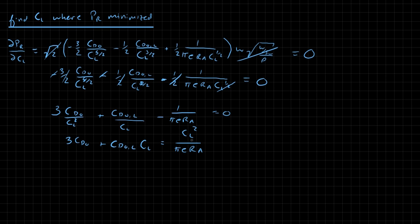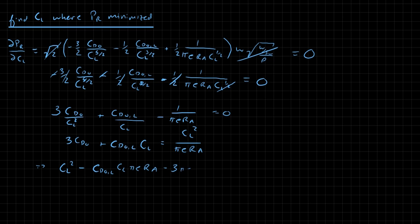From here we can write this whole thing out as a polynomial in CL and solve for the roots. We multiply through by pi*e*AR and bring everything over to one side. The result is: CL squared minus CD_naught_L times pi*e*AR times CL minus 3*pi*e*AR*CD_naught equals zero.